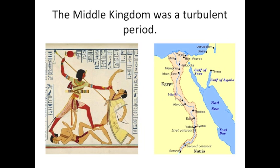The Middle Kingdom was a very turbulent period. The Nile did not rise as regularly as it had before, and corruption and rebellion were very common. But it wasn't all bad. A large drainage project helped create new stretches of farmland. Egypt also occupied a new part of Nubia in the south, a gold-rich land, and they increased their trade with the Middle East and the Mediterranean. You can see on this map the Kingdom of Egypt during the Middle period.